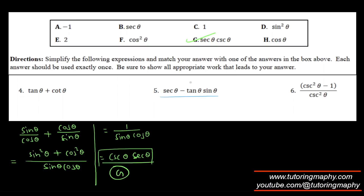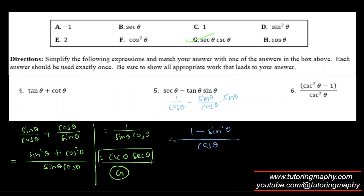For question 5, secθ minus tanθ·sinθ: secθ is 1/cosθ and tanθ·sinθ is sin²θ/cosθ. With cosθ as the common denominator, the numerator is 1 minus sin²θ. By the Pythagorean identity, 1 minus sin²θ = cos²θ, so we get cos²θ/cosθ = cosθ — that's option H.